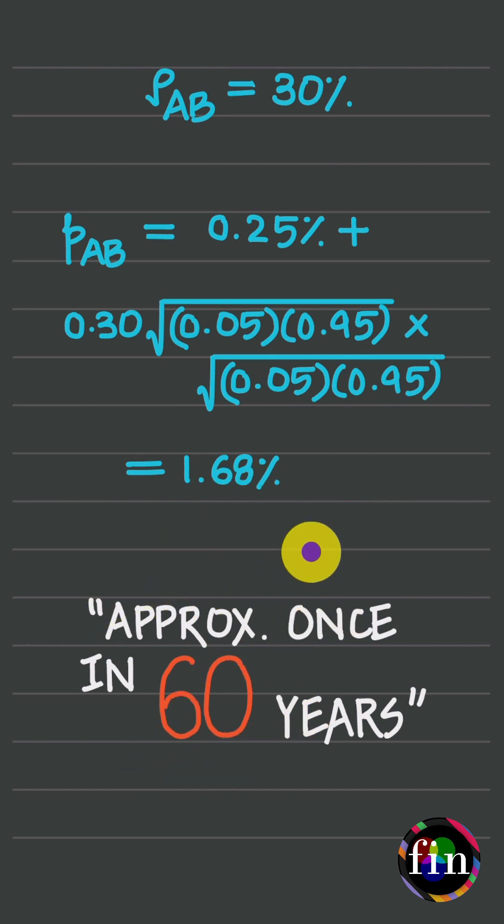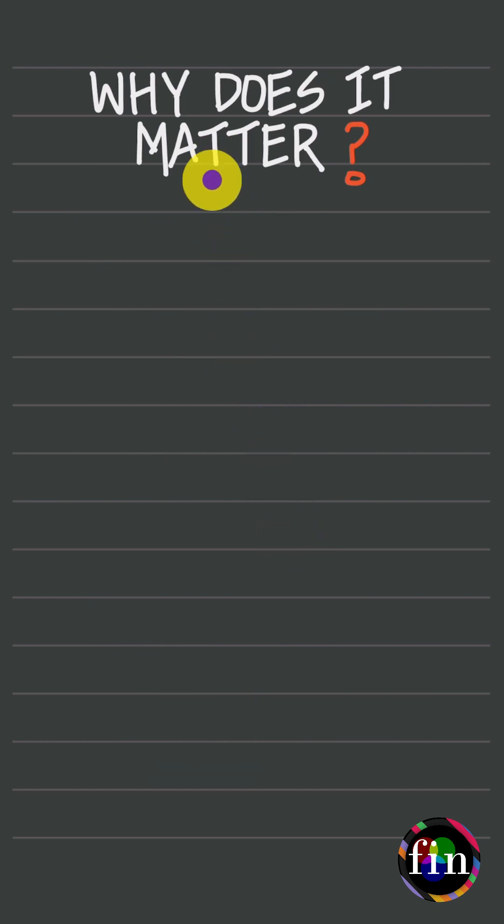So why is all this important? It's important because if you go purely by the probability of default values, which tend to be rather small, my loan portfolio appears quite safe. But in the presence of correlated defaults,